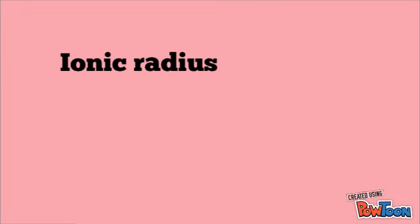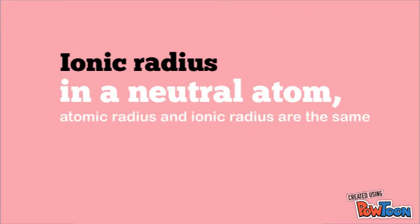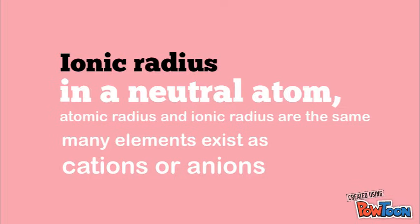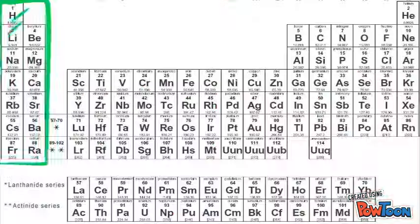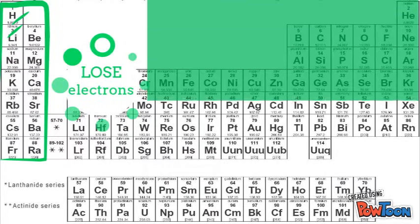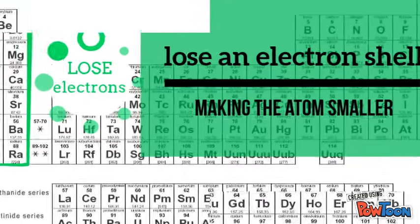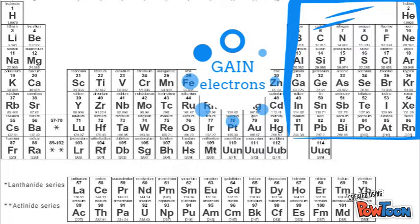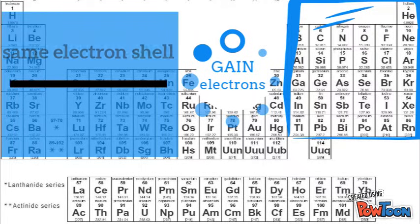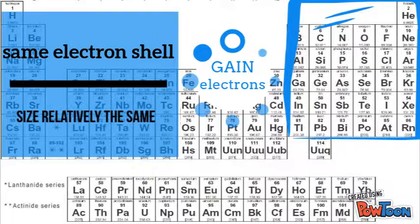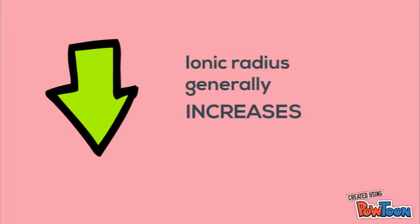Another trend is the ionic radius. In a neutral atom, the atomic radius and ionic radius are the same, but many elements exist as cations or anions. Those atoms will gain or lose electrons in their valence shells to get a full valence shell. Atoms on the left side of the table tend to lose electrons. Losing those electrons will empty their outermost shell, making their new valence shell the one closer to the nucleus, effectively making the atoms smaller. Atoms on the right side tend to gain electrons to fill their valence shell. Since the atom doesn't lose or gain an orbital shell, the size stays relatively the same. As you travel down a group, the ionic radius will generally increase, just like the atomic radius.